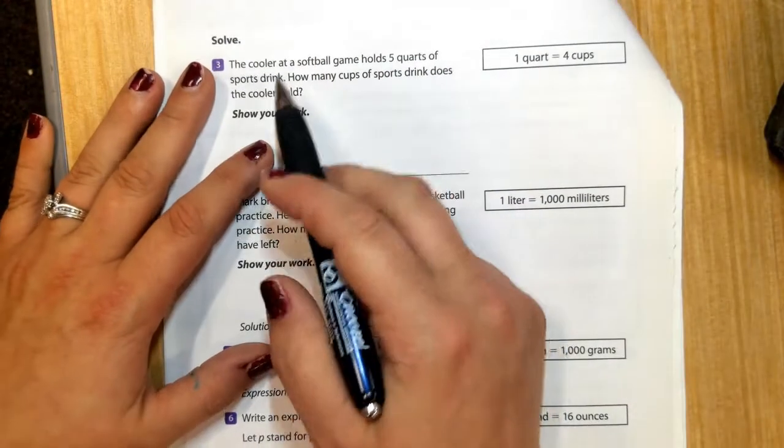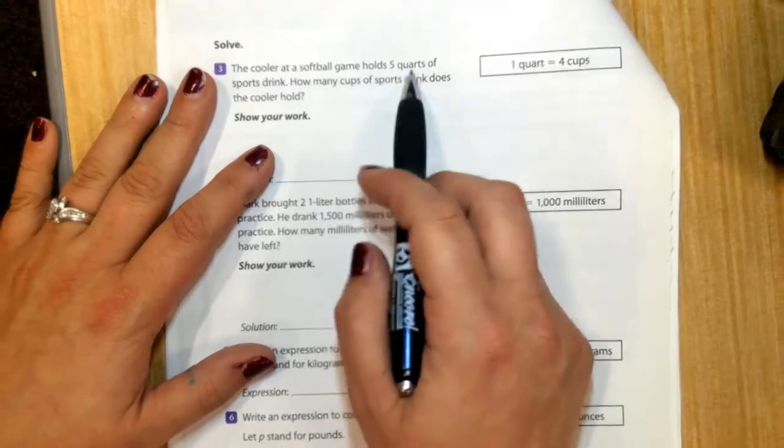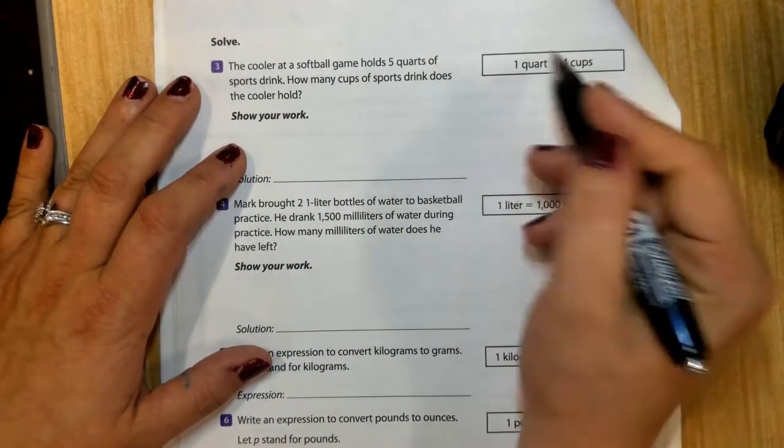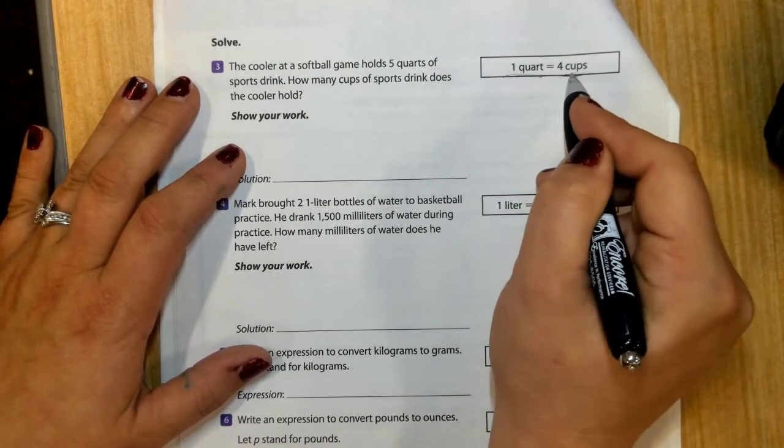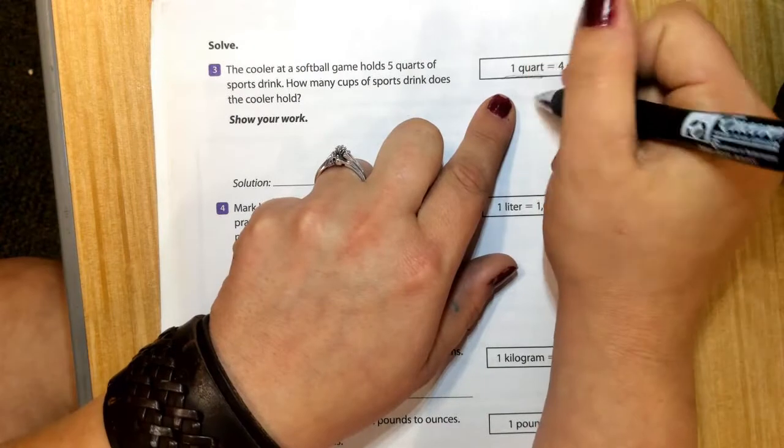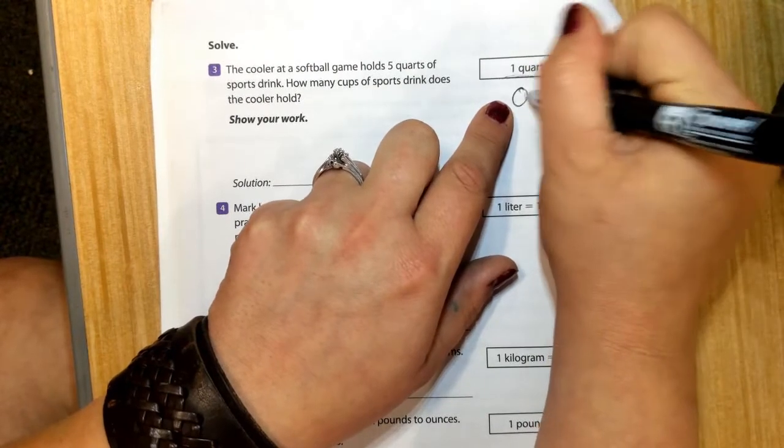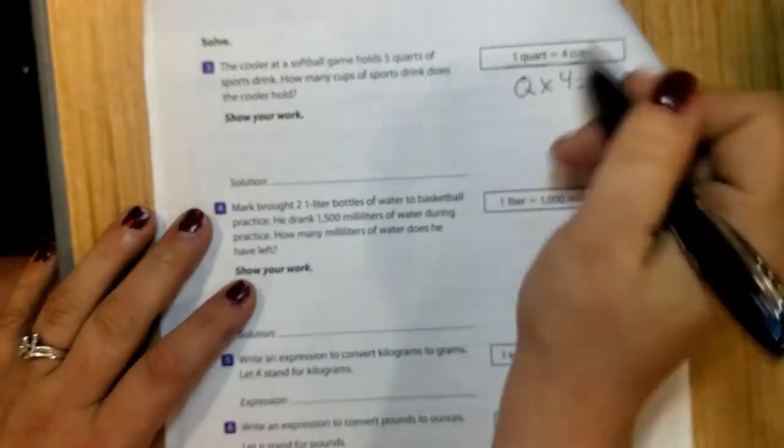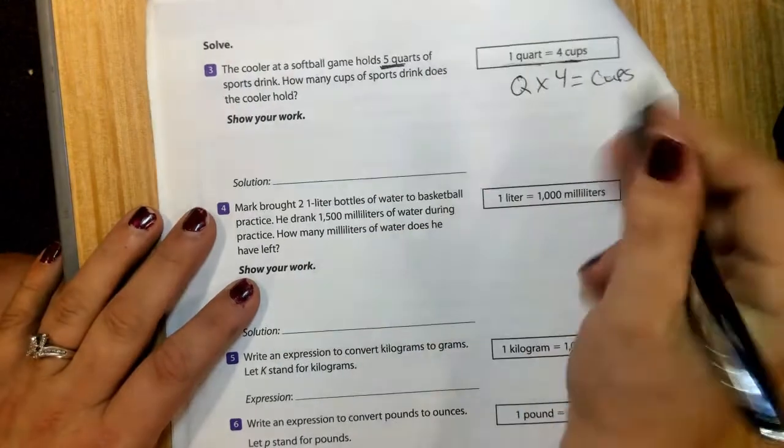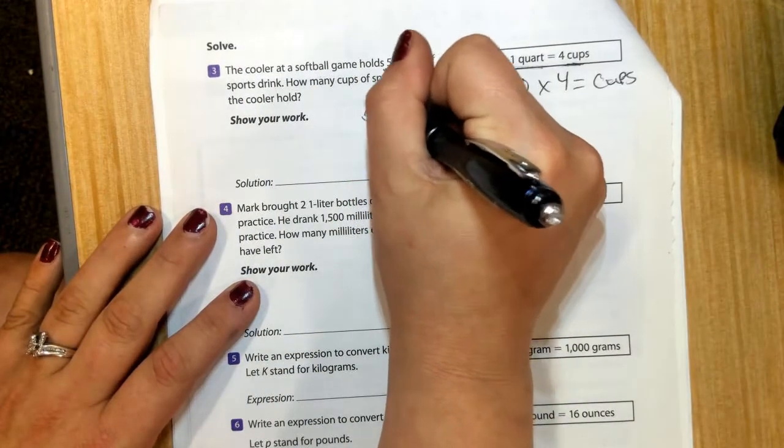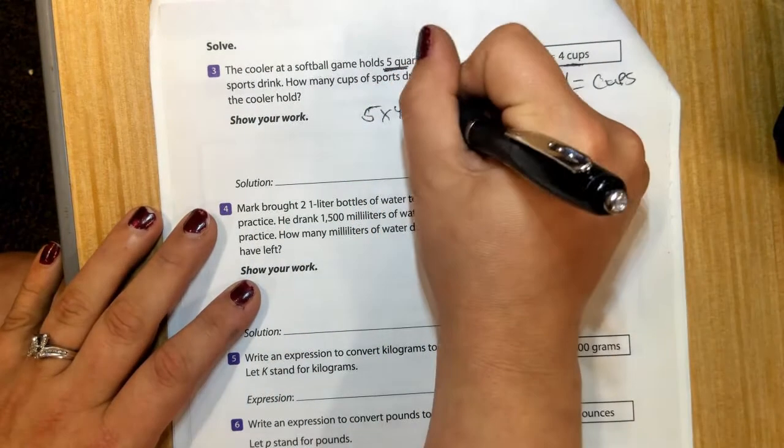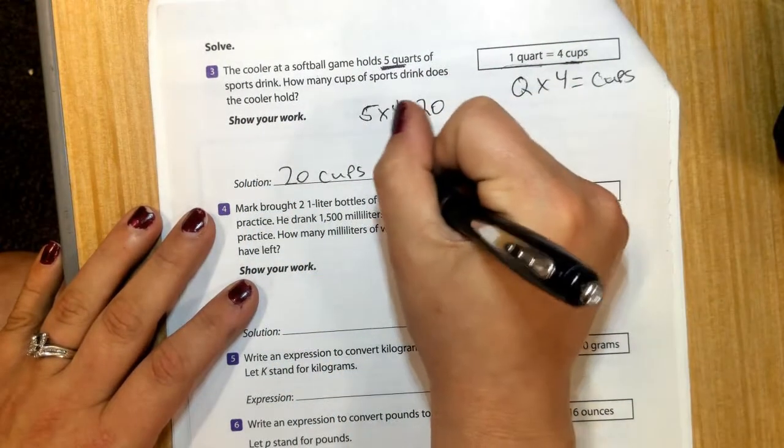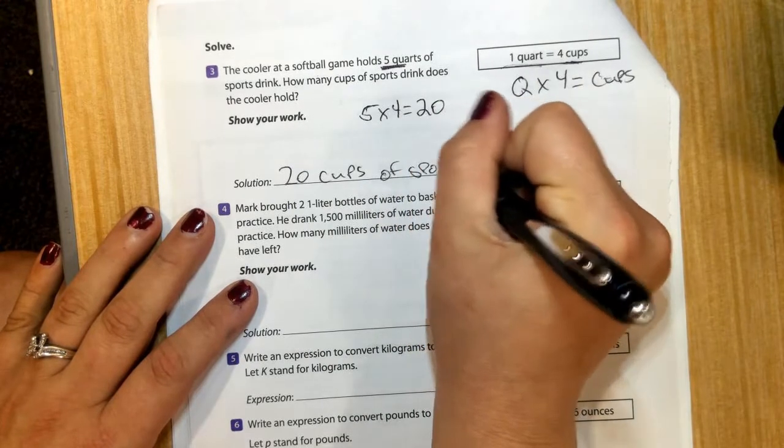Number 3, the cooler at a softball game holds 5 quarts of sports drinks. How many cups of sports drinks does the cooler hold? Well, for each quart we have 4 cups. If we wanted a formula, it would be quart times 4 equals cups. So all we need to do is input however many quarts we have. That would be 5 times 4 equals 20, 20 cups of sports drink.